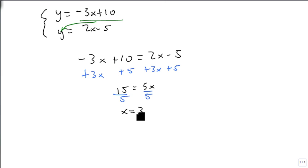We can then plug that into one of our choice. I'm going to plug it into the second one. So y equals 2 times 3 minus 5, which is 6 minus 5, which is 1.